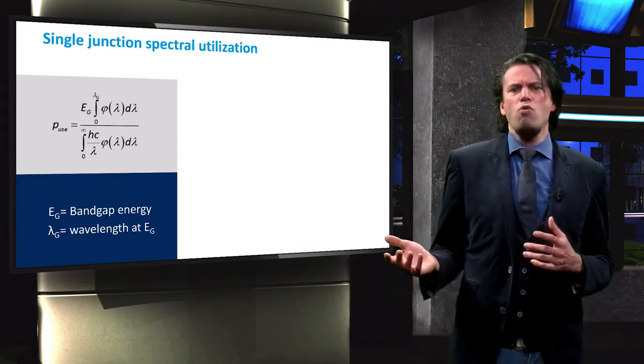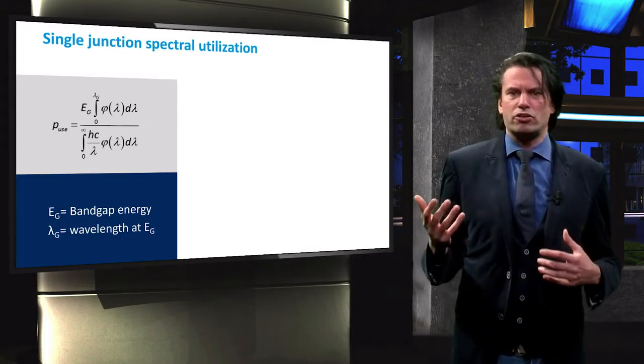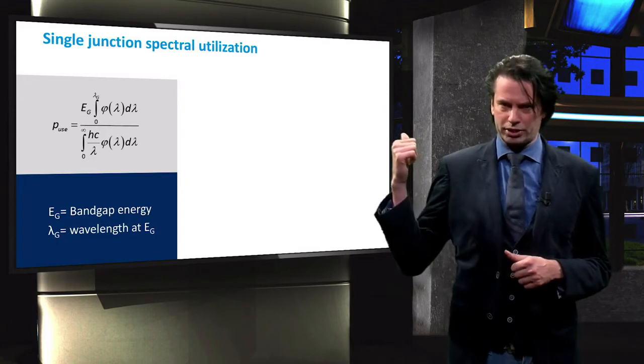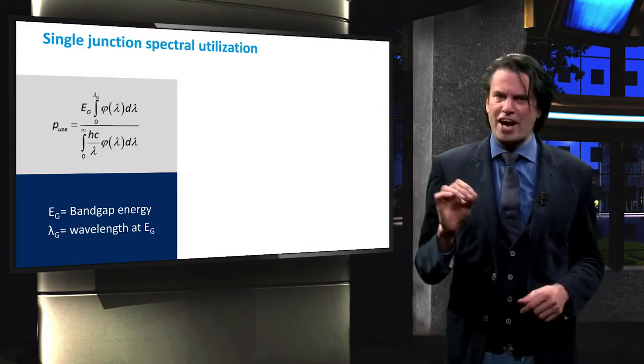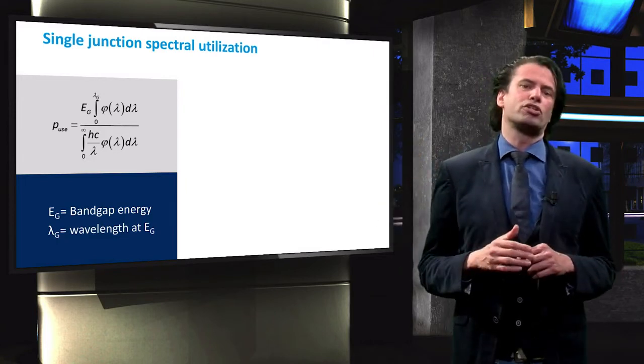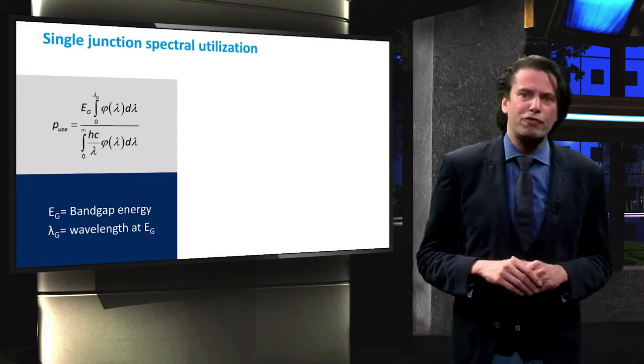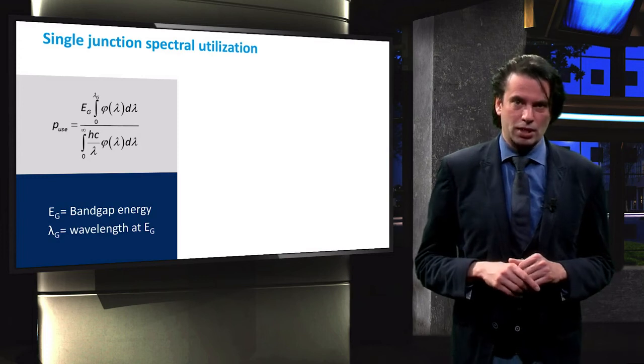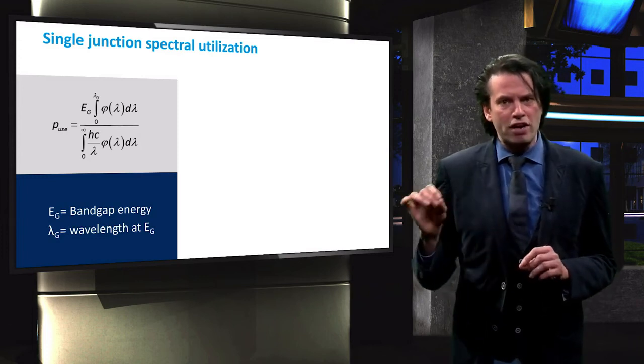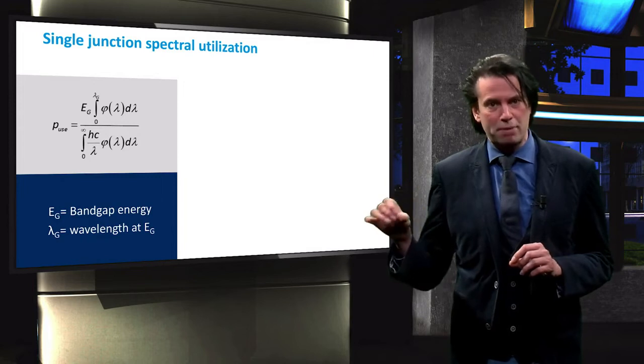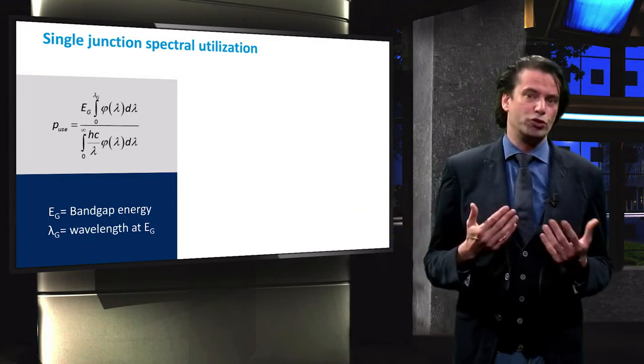So how large exactly are these losses? We can determine that using this equation. It shows the fraction of incident energy that the solar cell can use, indicated by P_use, as a function of its band gap energy.